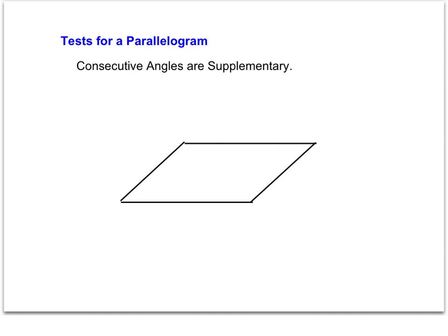Consecutive angles are supplementary is our last test. Consecutive angles are any angles that are next to each other, or adjacent, and there are four sets of consecutive angles in any quadrilateral. When we say consecutive angles are supplementary, we need all four sets to be supplementary — knowing just one set is supplementary isn't enough. Additionally, these angles would also pass the third test, since if all consecutive angles are supplementary, the opposite angles are congruent. But upcoming examples will specifically address consecutive angles being supplementary.